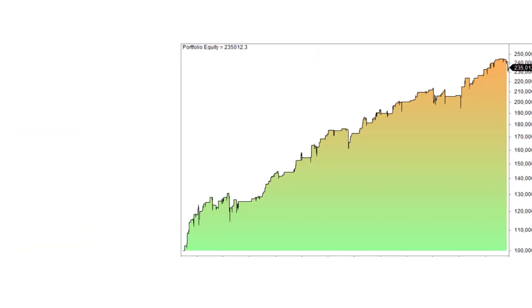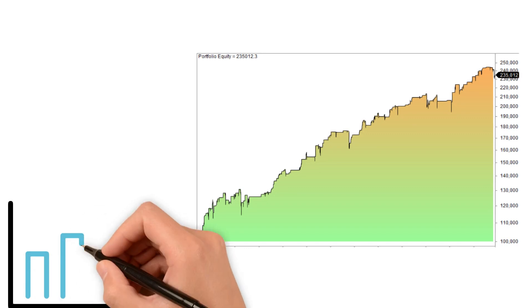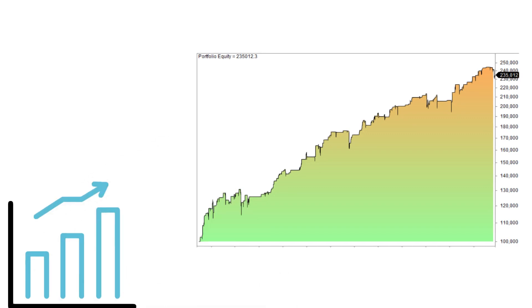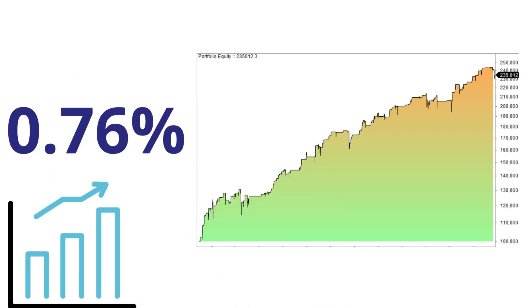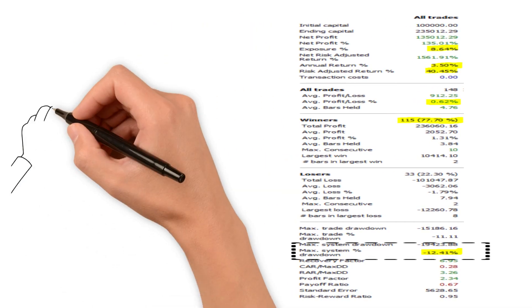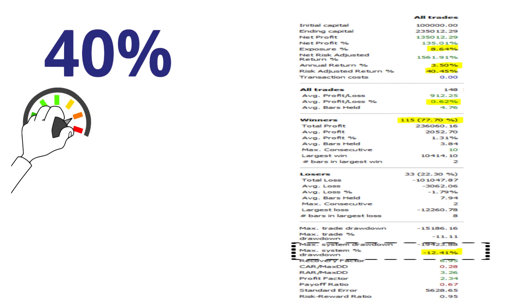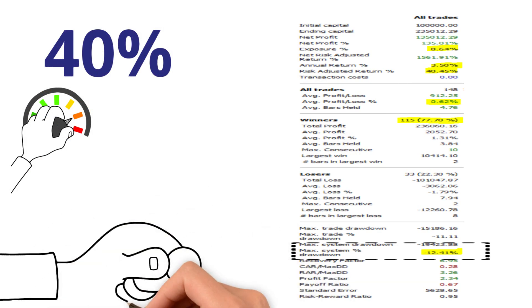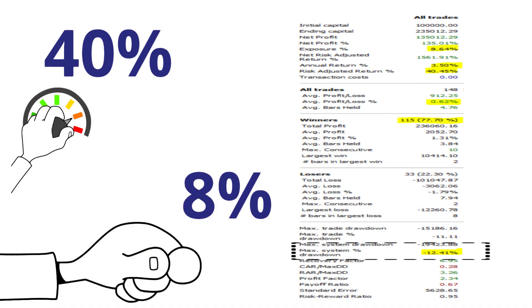As expected, you get a lot fewer trades, but the average gain per trade is high at 0.76%. Max drawdown is also pretty low at only 12%, and the risk-adjusted return is high at 40% because the strategy is only invested 8% of the time.